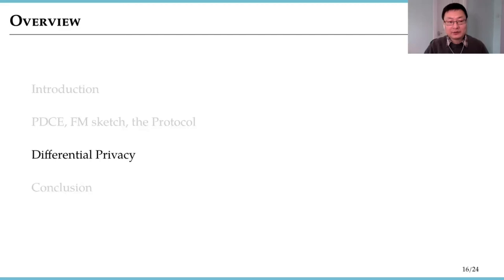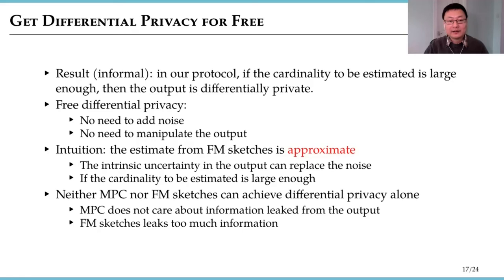How about differential privacy? In our protocol, if the cardinality to be estimated is large enough, then the output is differentially private. Here, differential privacy is obtained for free. That means we don't need to add noise in the process of computation and we don't need to manipulate the output after the computation.